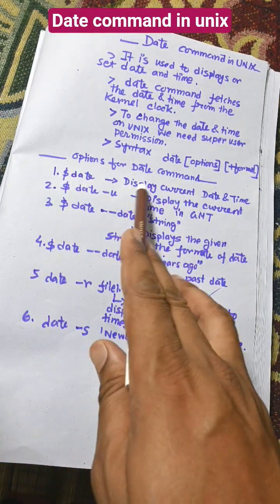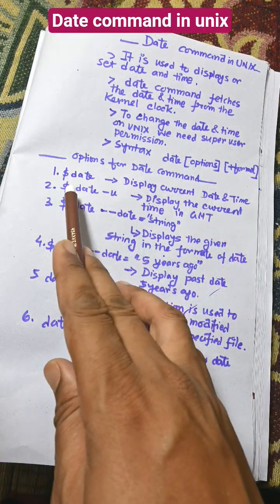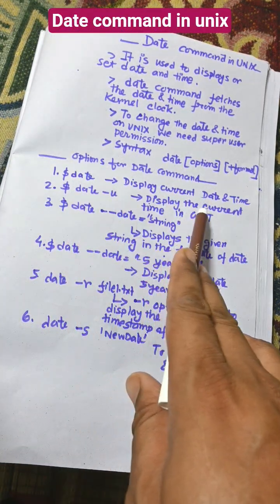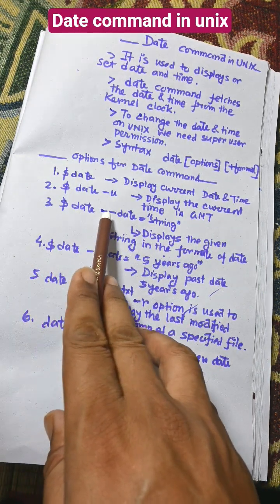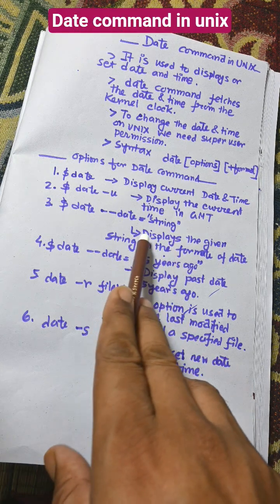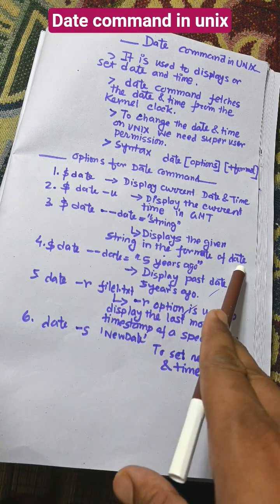$date displays the current date and time. $date -u displays the current date and time in GMT. $date --date=string displays the given string in the format of date.